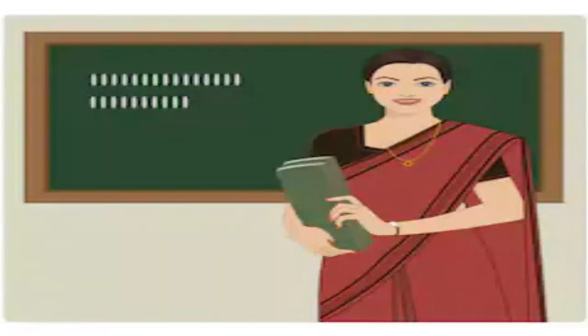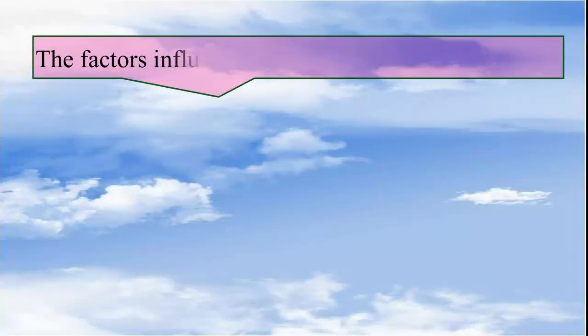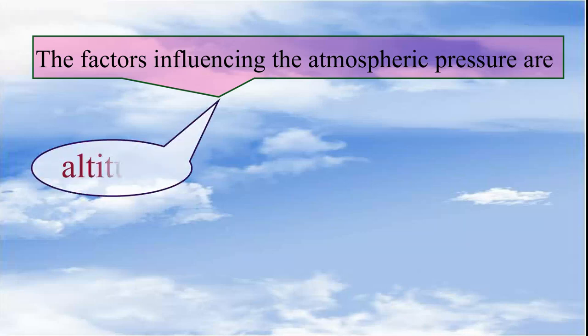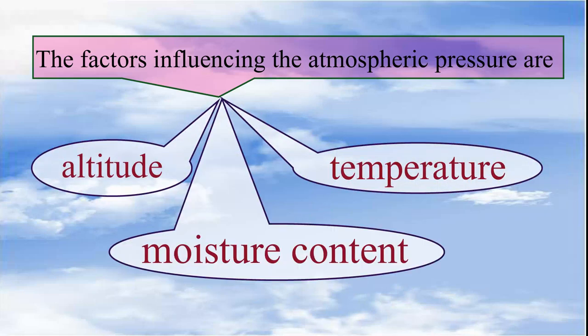Children, please remember that air always moves from high pressure areas to low pressure areas. The factors influencing the atmospheric pressure are altitude, temperature, and moisture content.